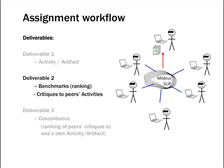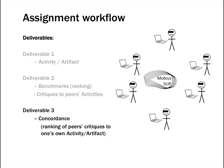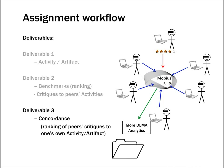Simultaneously, the Mobius SLIP algorithm produces analytic metrics so the instructor can monitor the class's progress. Finally, in Deliverable 3, called the Concordance Phase, each student submits the ranks for the critiques received from their peers based on the quality of that feedback. Once the Deliverable 3 period closes, the Mobius SLIP system automatically computes individual and aggregate statistics for the class.